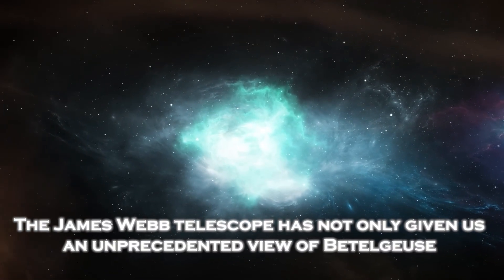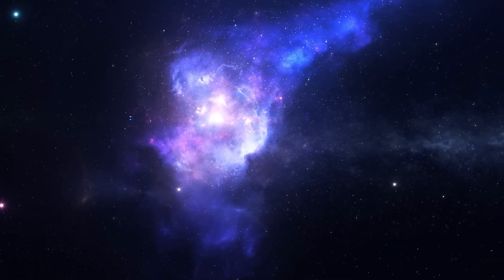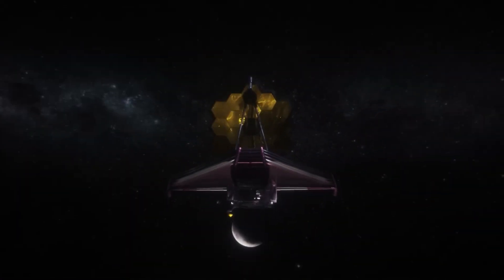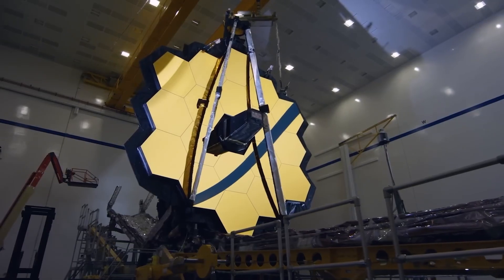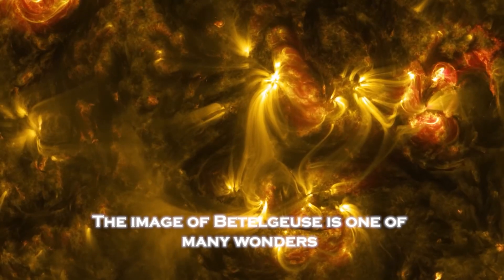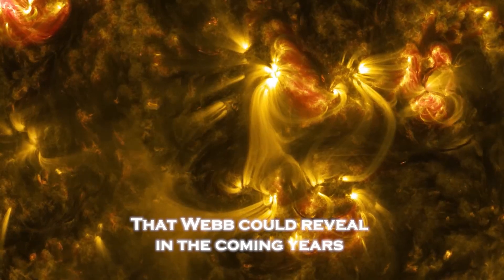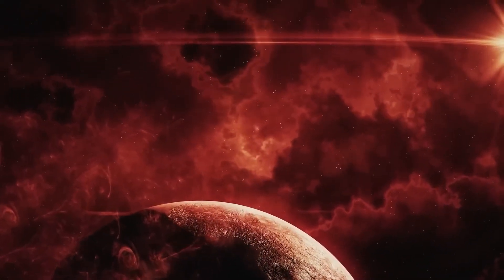The James Webb telescope has not only given us an unprecedented view of Betelgeuse, its mission is just beginning. From distant galaxies to potentially habitable planets, the James Webb is designed to look farther than we have ever reached. What it has captured so far is just the beginning of a revolution in astronomy. The image of Betelgeuse is one of many wonders that Webb could reveal in the coming years. From star formation to the search for life, each observation represents an opportunity to unlock the deepest secrets of the universe.